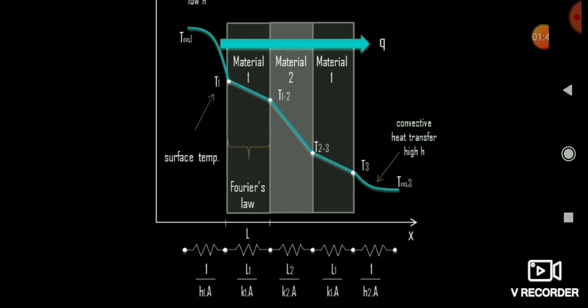This is clearly a case of series connection. Just as in electrical circuits there are two types of connections — series and parallel — here the materials are arranged in series. In a series connection, the current passing through all resistors is equal. Similarly here, the heat Q passing through all materials is equal.